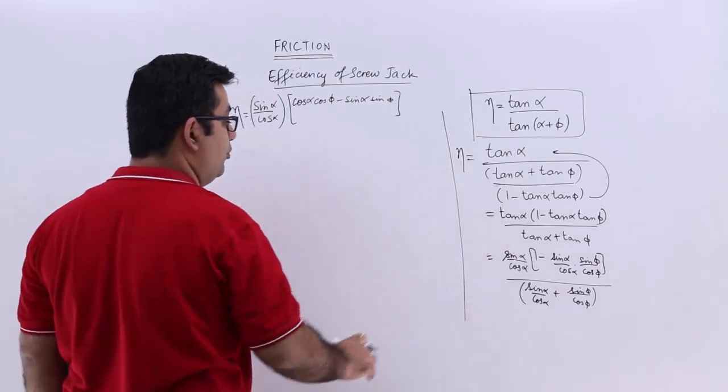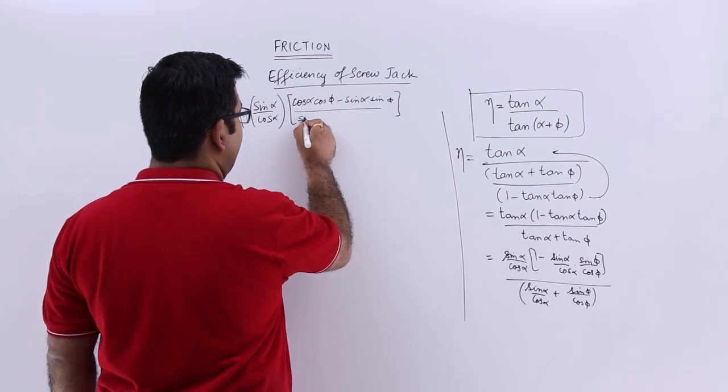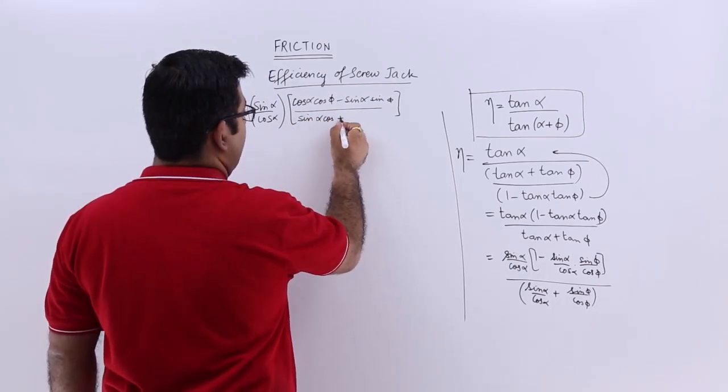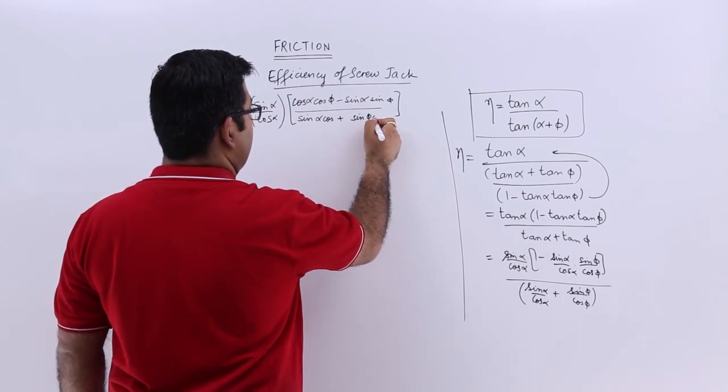At the bottom also you will have your LCM as cos alpha cos phi, so they will both be cancelled and you will have the bottom as sin alpha cos phi plus sin phi cos alpha.